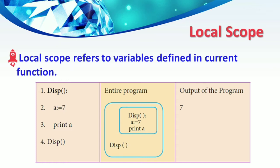The variable has a certain range. If you access a particular variable defined in the local scope, you get the output 7. In this code, variable `a` displays the value 7 because it is defined and available in its local scope, so the output is 7.